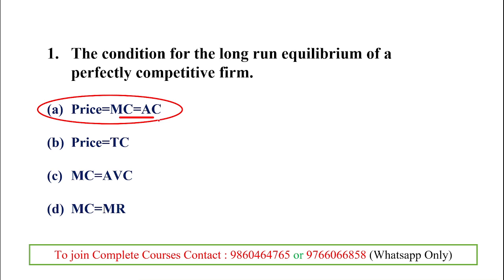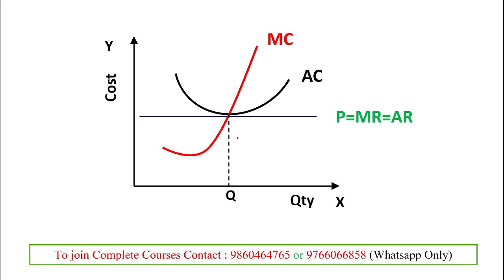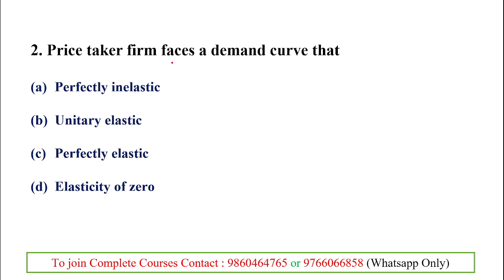The firm enjoys normal profit and does not yield a super-normal profit. Looking at the diagram, where AC and MC meet, Q is the equilibrium output. The average revenue and marginal revenue equal the price, and AC equals MC at that price. So the long-run equilibrium is P = AC = MC.